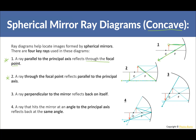You can actually test this with a makeup or shaving mirror — go further out and your face appears upside down and bigger. The third ray goes perpendicular to the mirror through the center of curvature and reflects back on itself. The fourth ray hits the mirror at the principal axis and reflects back at the same angle. All rays converge at the same image point.